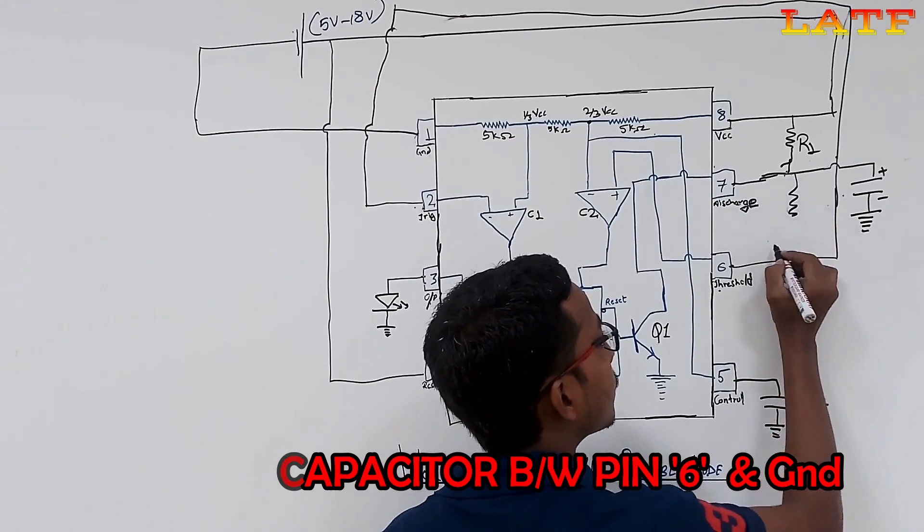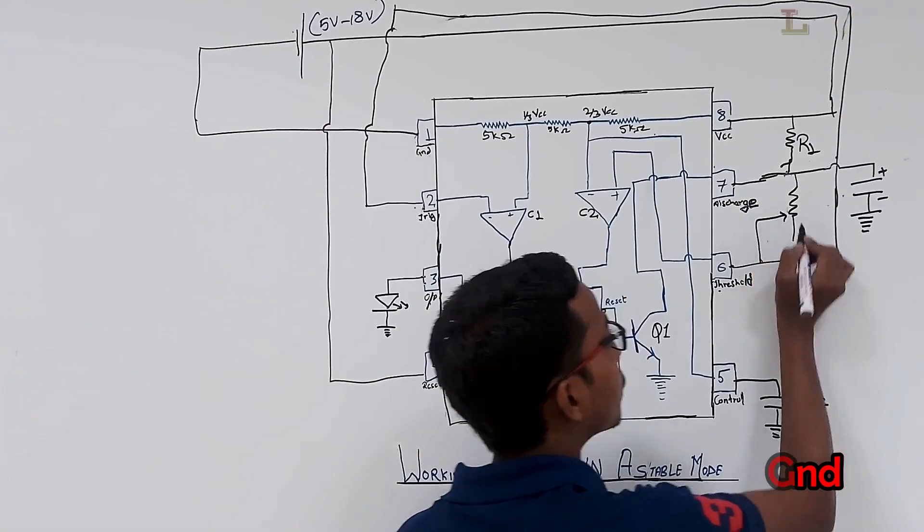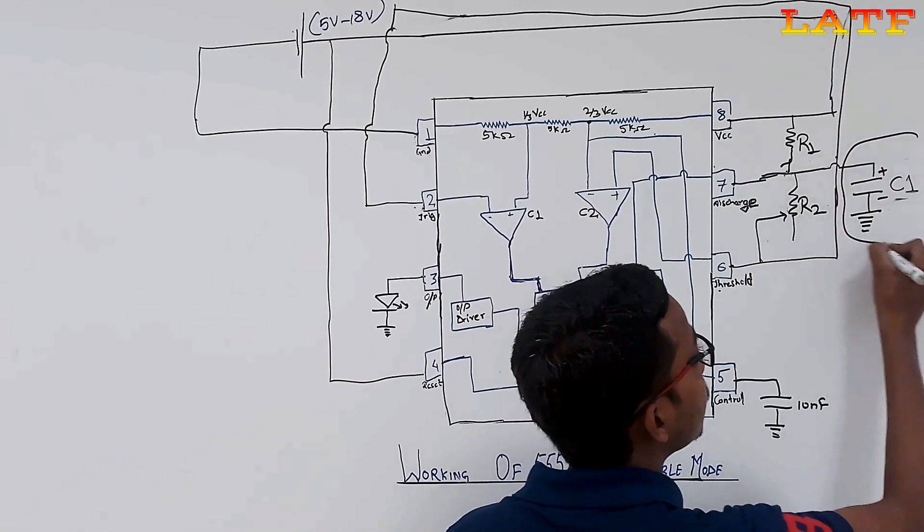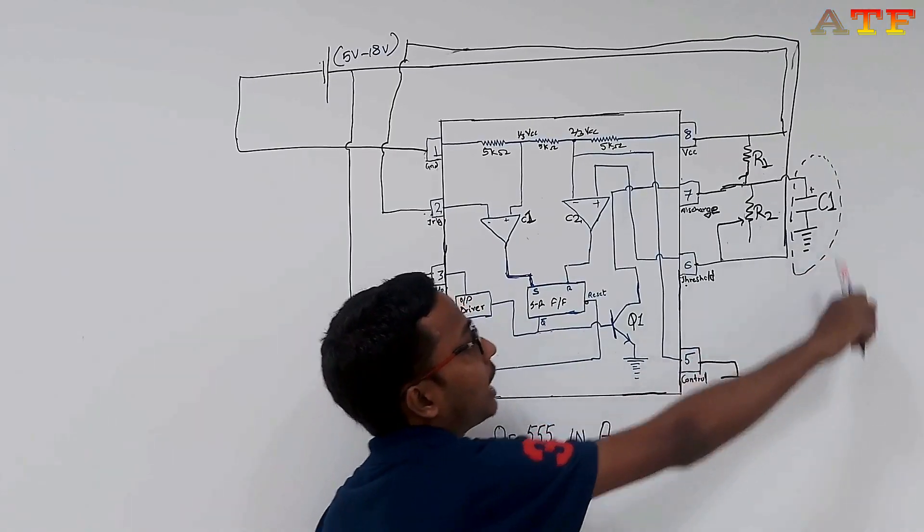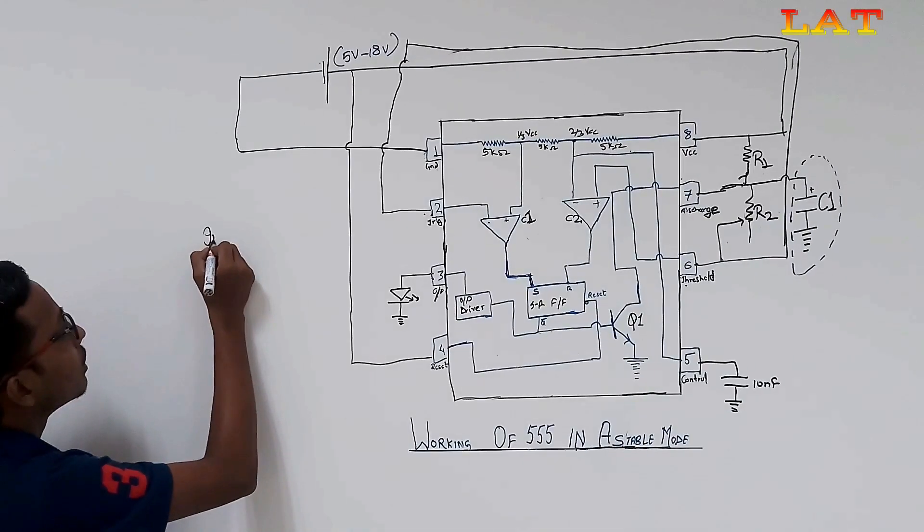Now, connect the variable resistance between pin number 6 and 7, and let it be R2. Now, let us see the working of 555 in astable multivibrator mode.